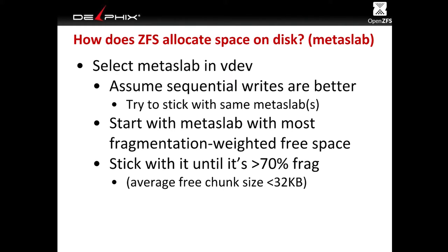We stick with the chosen metaslab because otherwise we'd just allocate a little from each, spreading our writes all across the whole device. We stick with the metaslab we've chosen until it's more than 70% fragmented, which means the average free chunk size is around 32 kilobytes.